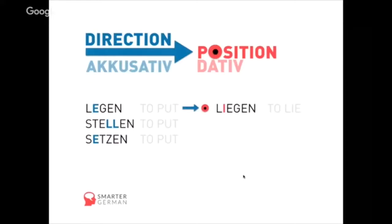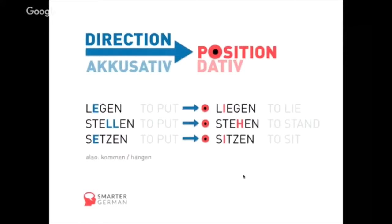Setzen is the action that leads to the position sitzen, meaning 'to sit.' There are also verbs generally associated with the accusative when used with Wechselpropositionen — for example, kommen (to come) and hängen (to hang something). With dative and a fixed position, we associate sein (to be), wohnen (to live/reside), leben (to live — slightly stronger than wohnen), and hängen meaning 'to be hanging' once something is already on the wall.